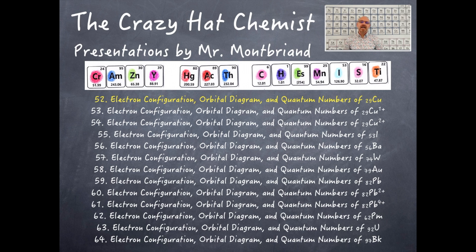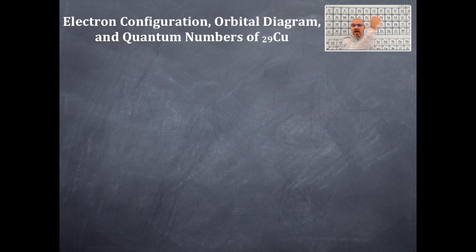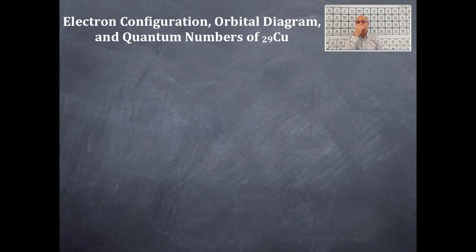Welcome to the Crazy Hack Chemist. Today we're doing another video on atomic structure and electron configuration — specifically electron configurations, orbital box diagrams, and quantum numbers for copper.